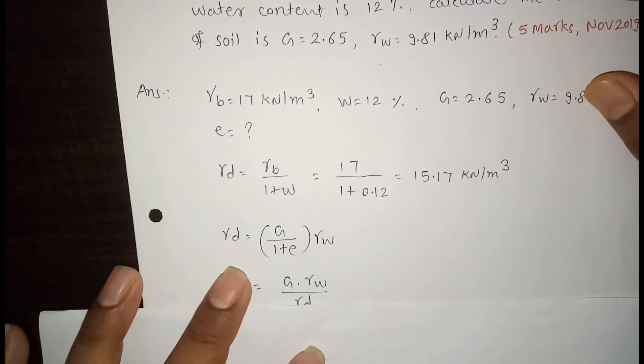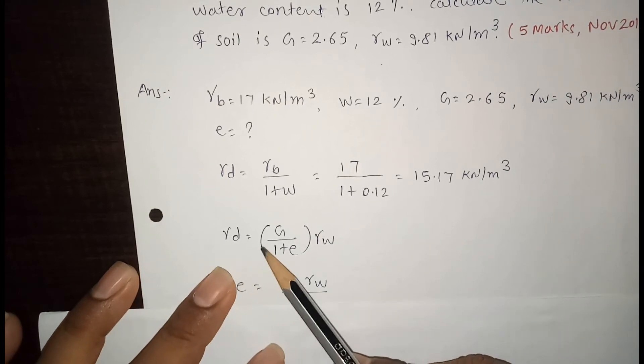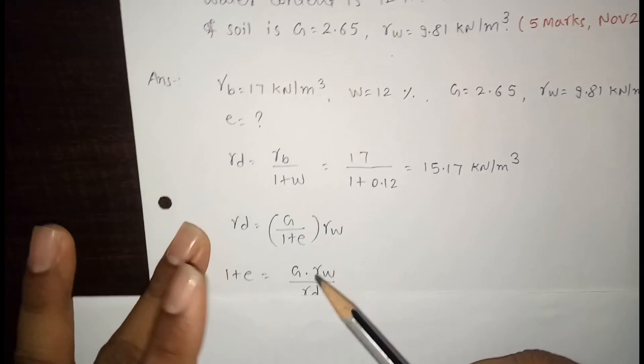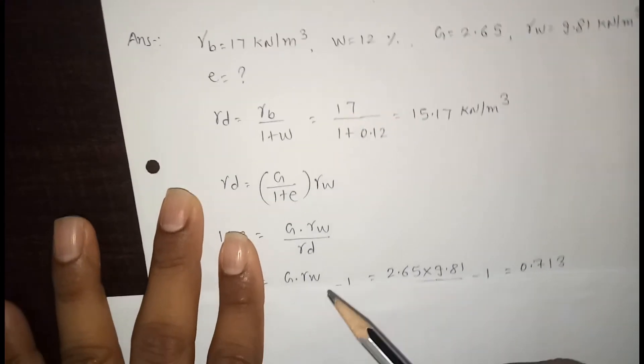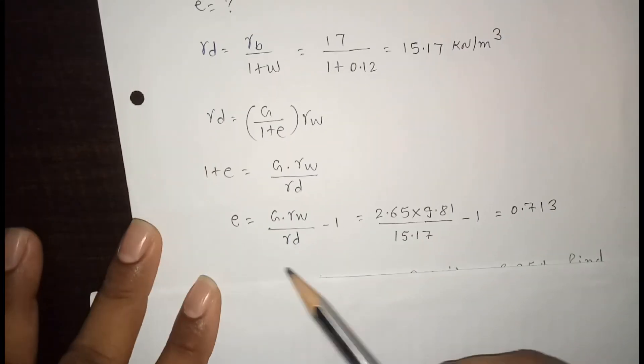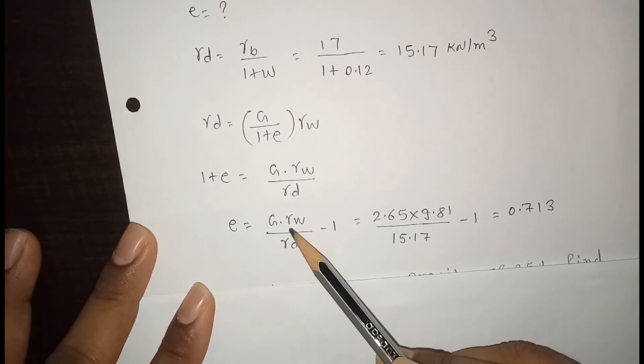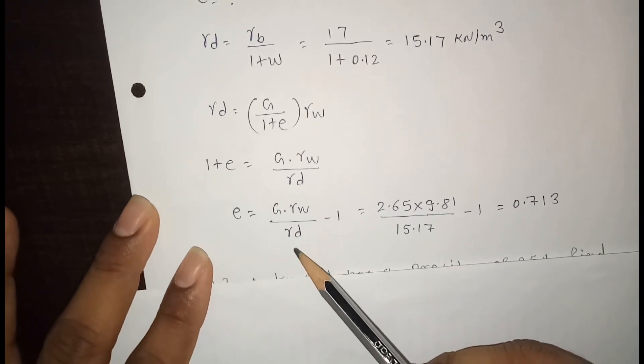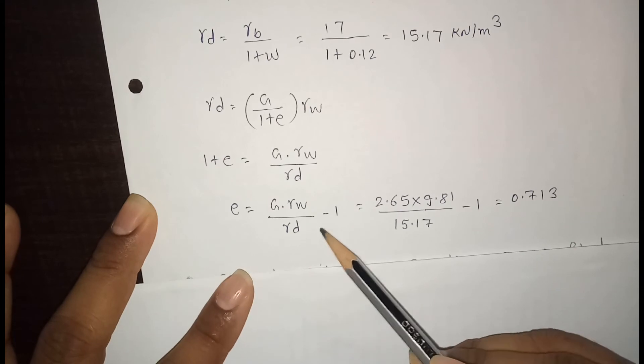Now we know that again dry unit weight is equal to G upon 1 plus E into gamma W. So after doing cross multiplication, we will get this equation: E is equal to G gamma W upon gamma D minus 1.